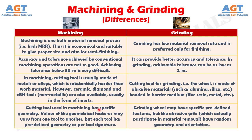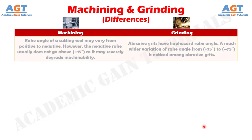Number 4: the cutting tool used in machining has specific geometry. Values of the geometrical features may vary from one tool to another, but each tool has a predefined geometry as per tool signature, whereas the grinding wheel may have specific predefined features, but the abrasive grits which actually participate in material removal have random geometry and orientation.